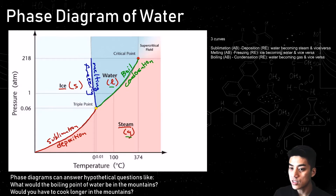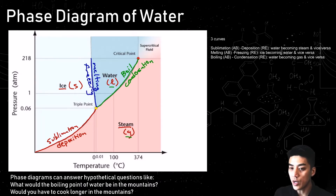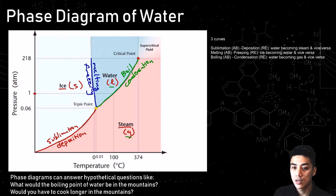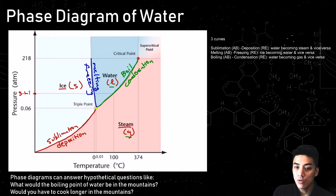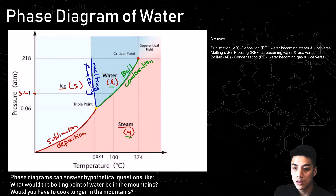So those are our six phase changes, divided into three curves or three lines. It all makes sense once you think about what absorbs energy and what releases energy. One atmosphere of air pressure is sea level, and this is how you read a phase diagram.